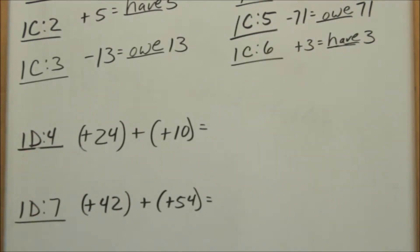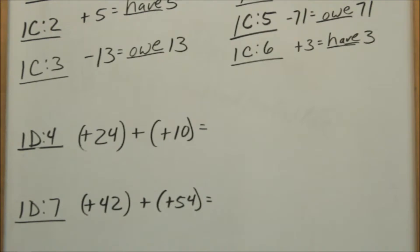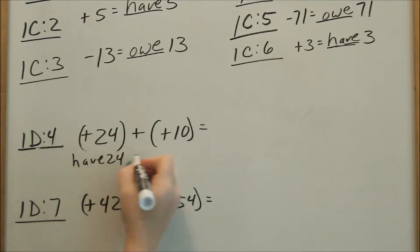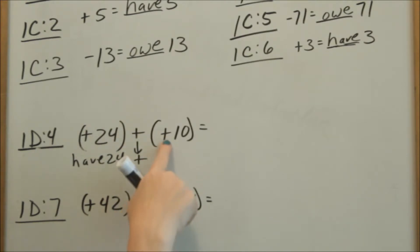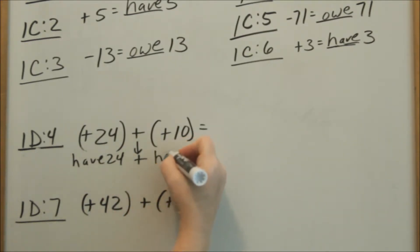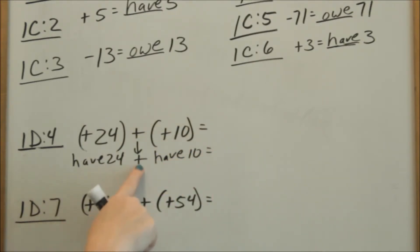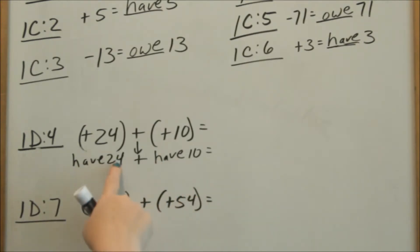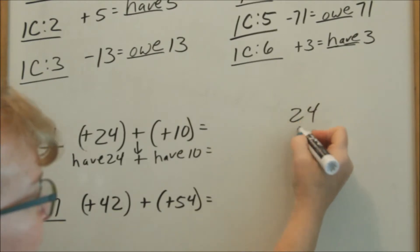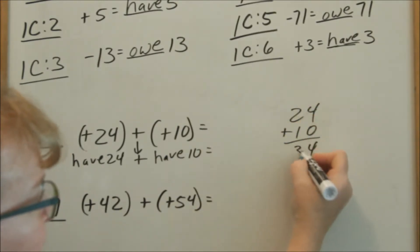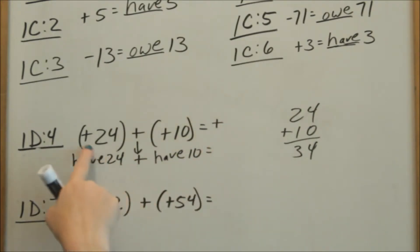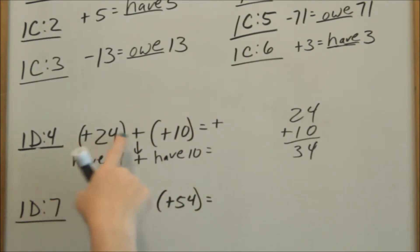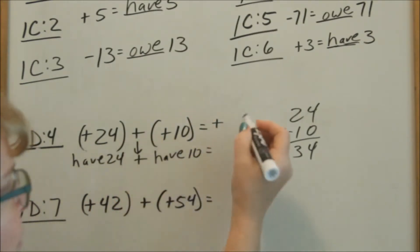On page D number 4, this says you have 24 because the positive sign means you have 24. Then you're adding, and the positive means you have 10 more. So essentially this is the same as 24 plus 10 — I have 24 and I'm adding 10 more. 24 plus 10 is 34. If you have and you're adding more, you're still going to have, so the answer is positive 34.